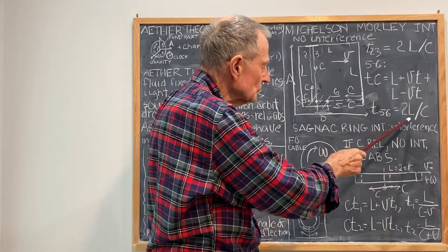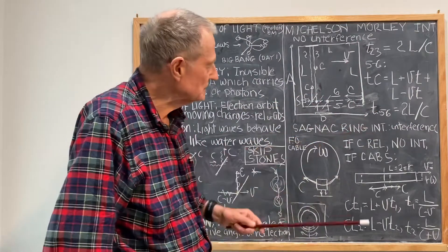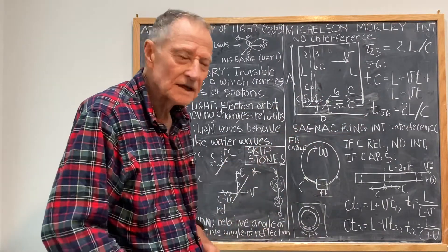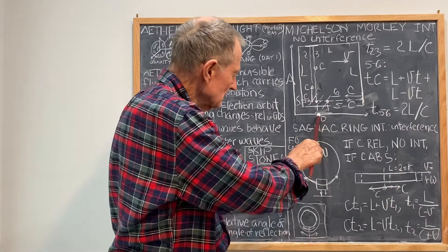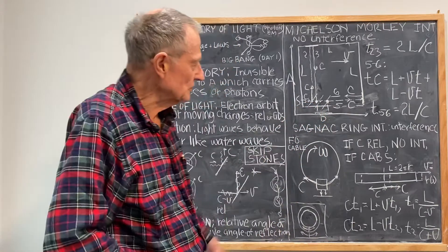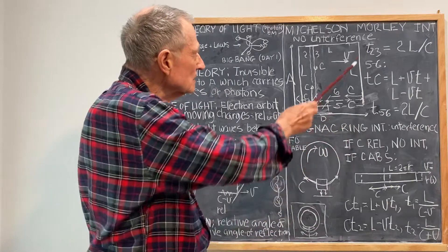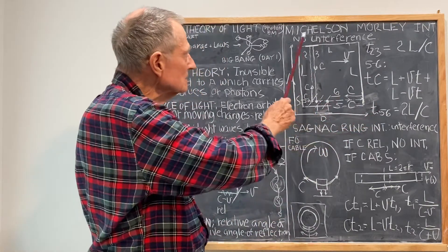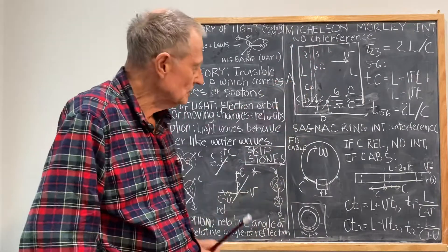Both times are exactly the same, and you would expect no interference pattern when the two beams emerge and hit the camera, the detector. So, the results are completely consistent with the Michelson-Morley experiment, which is that there is no interference.